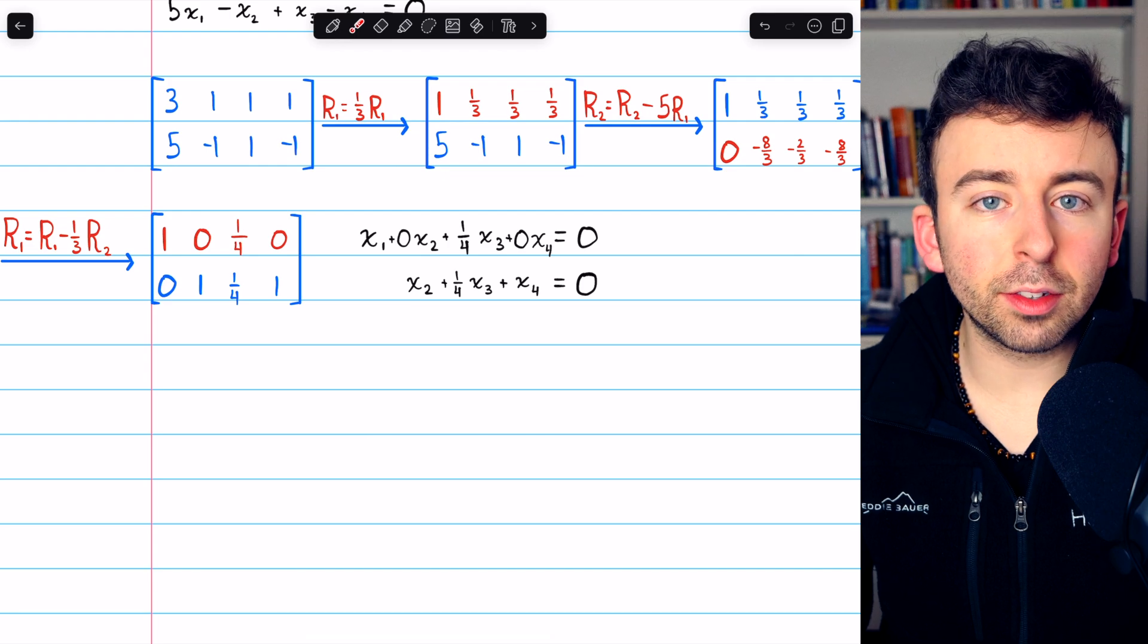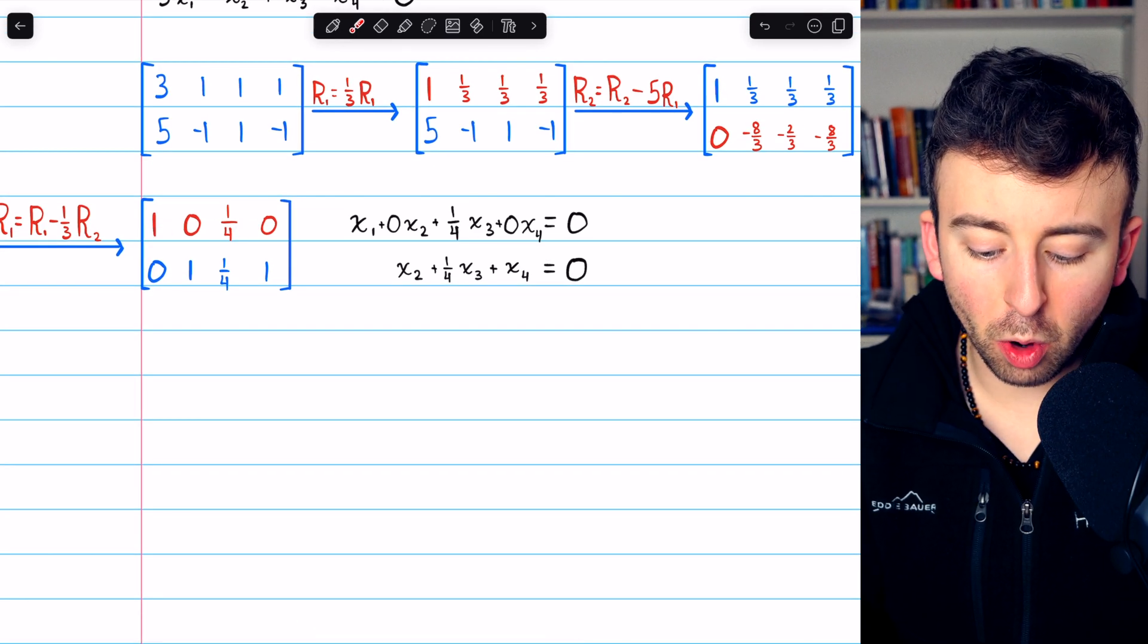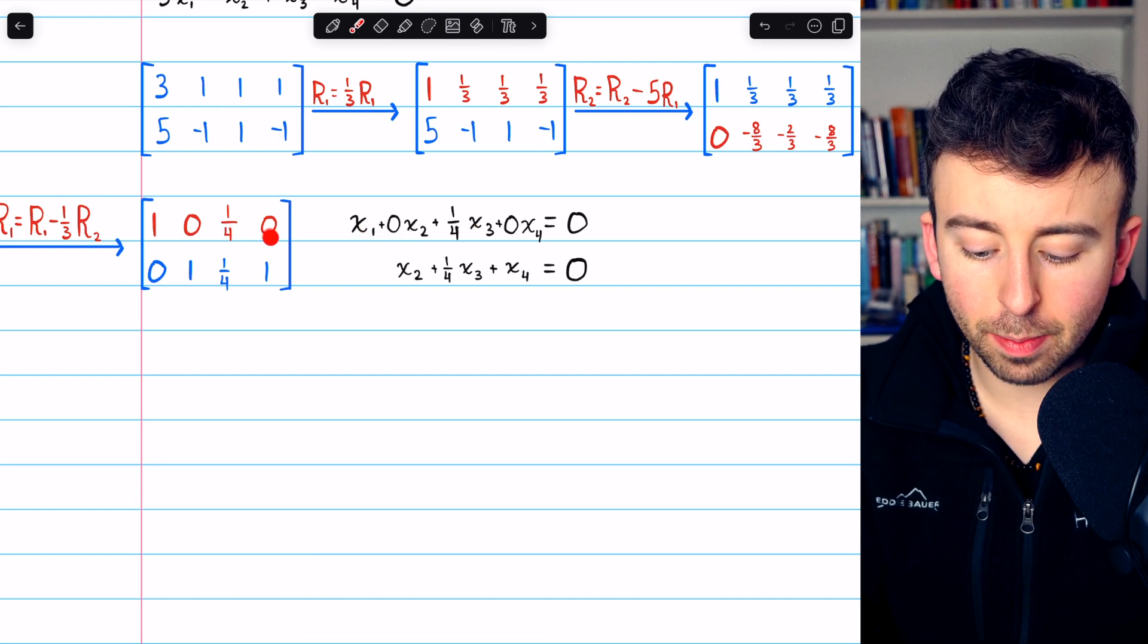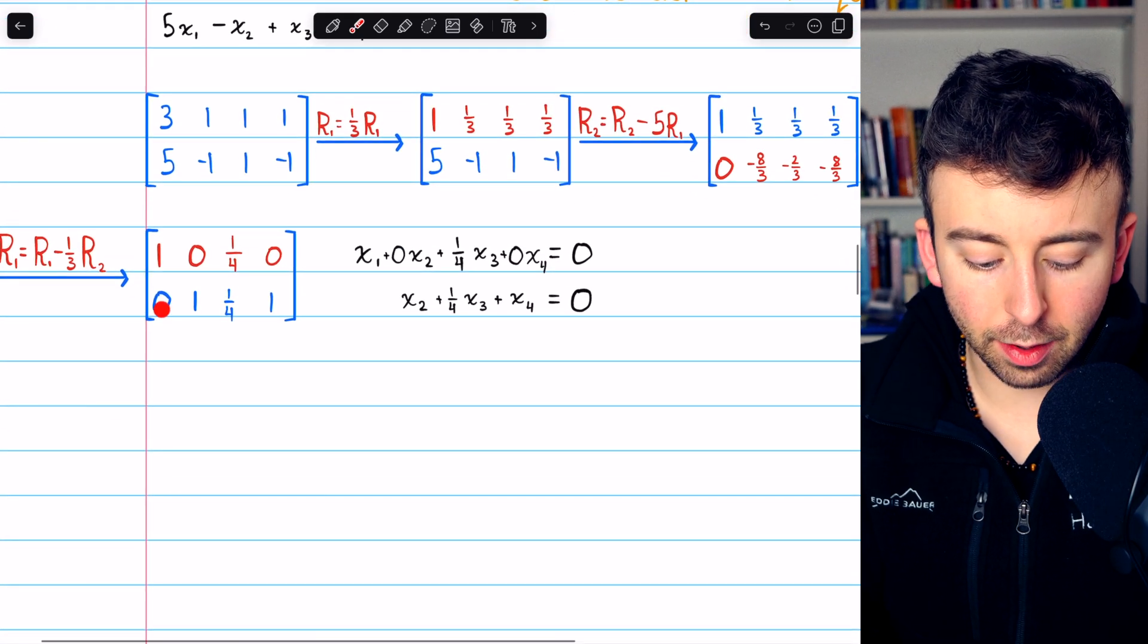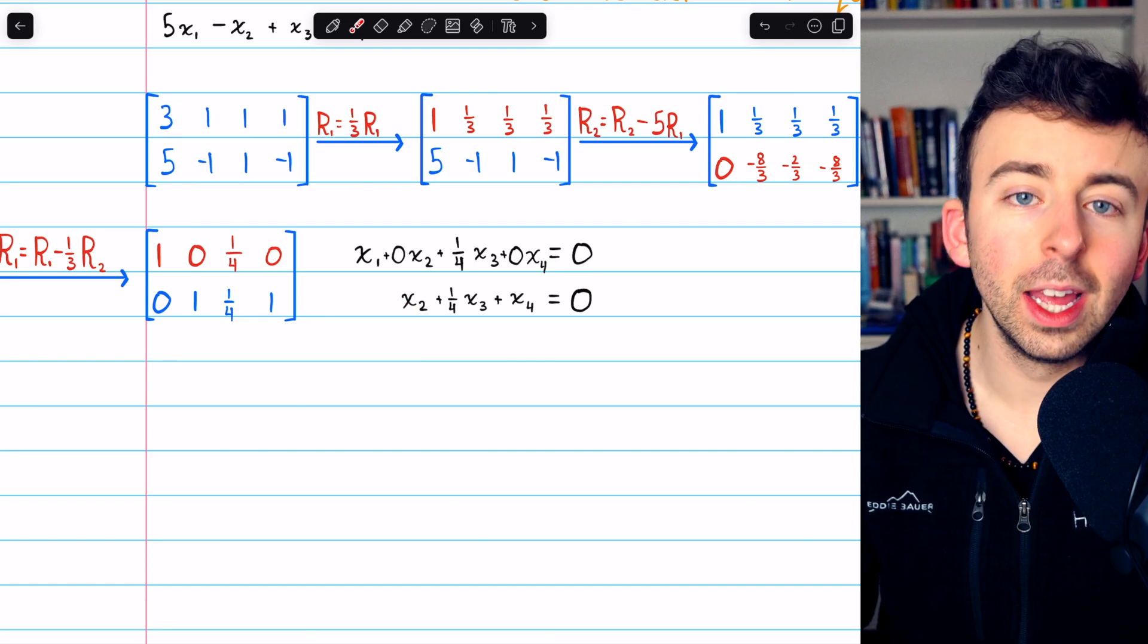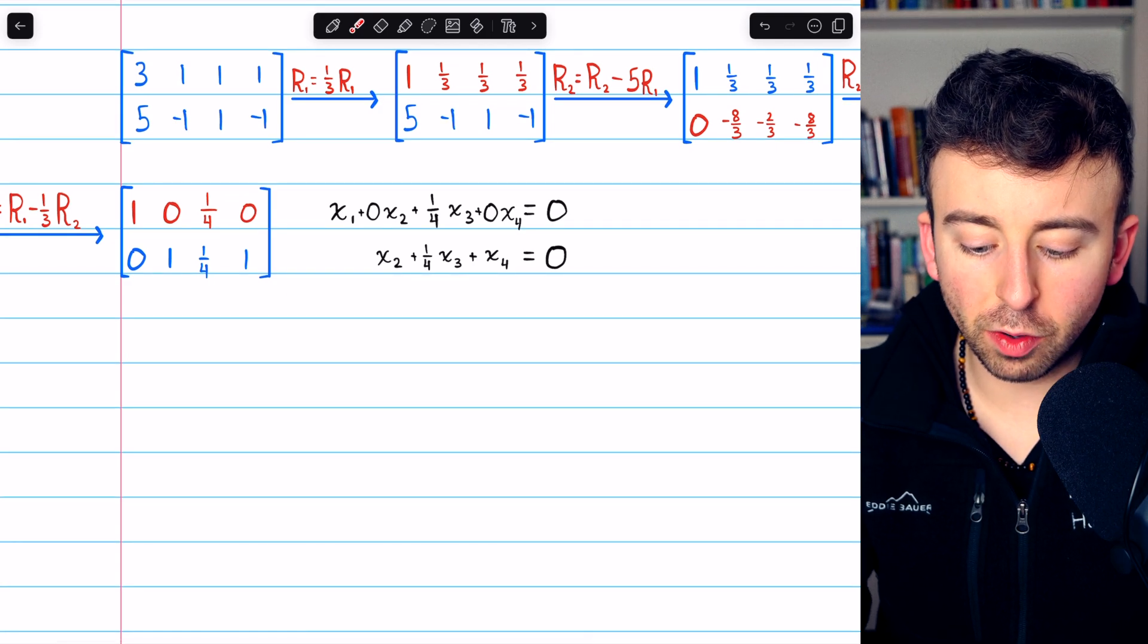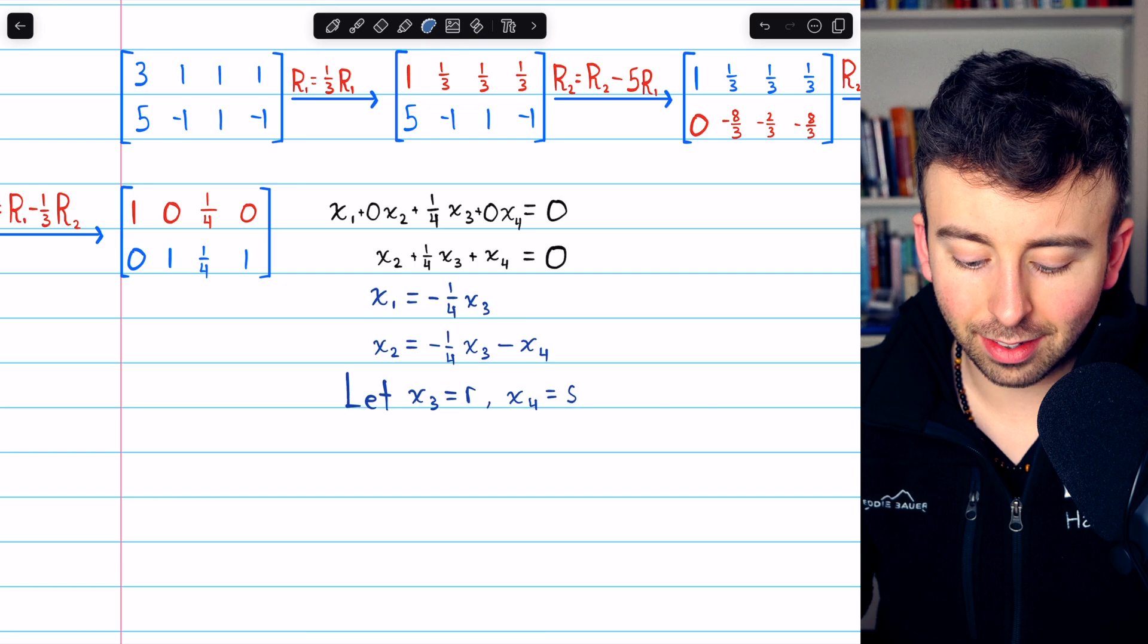From here, we can pretty easily describe the infinite set of solutions. We have from row one that x1 plus 0x2 plus a fourth x3 plus 0x4 equals zero. And from row two, we get this equation with 0x1s, 1x2, and so on equals zero. Now we'll solve each of these equations for the leading variables. And that gets us here.